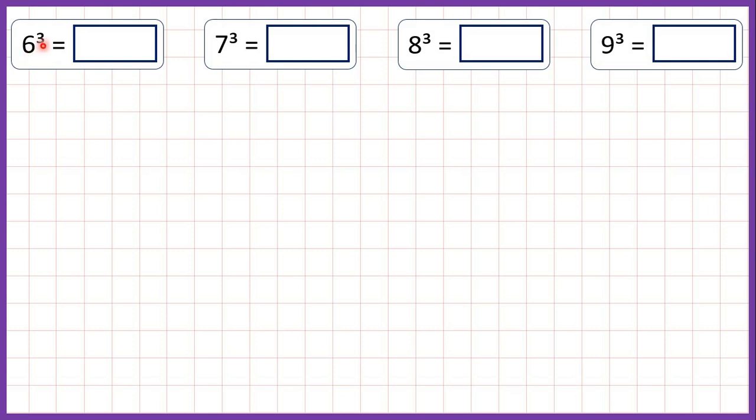6 cubed means 6 times 6 times 6. 6 times 6 is 36, then we need to take that 36 and multiply it by 6 again. 3 times 6 is 18 plus 3 is 21, so 6 cubed is 216.